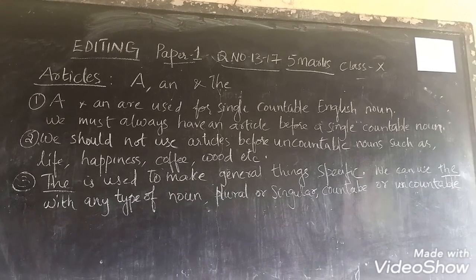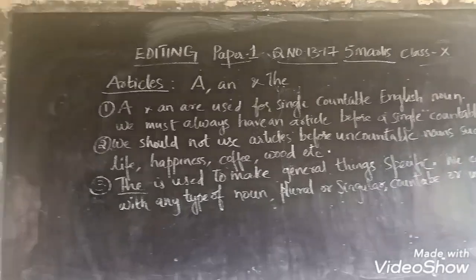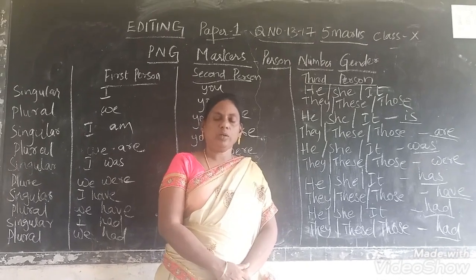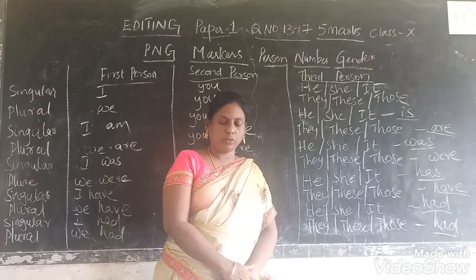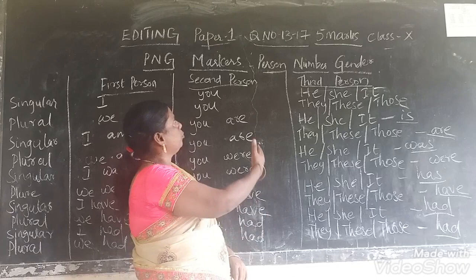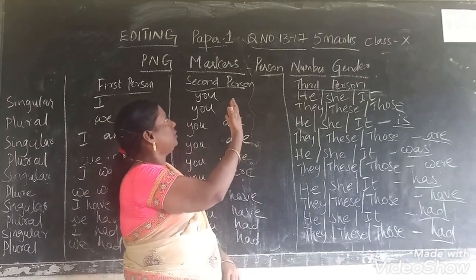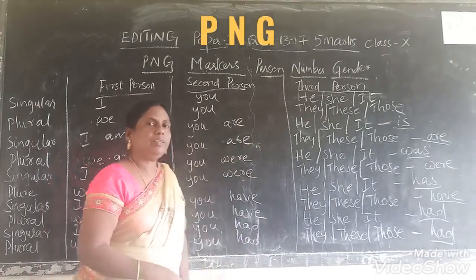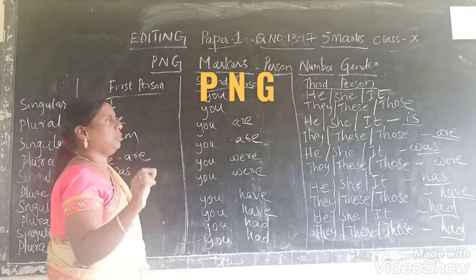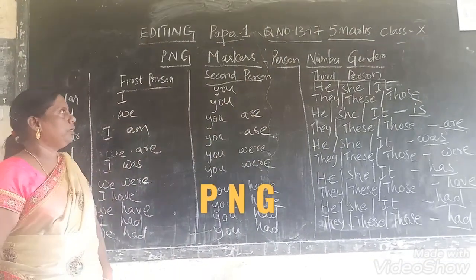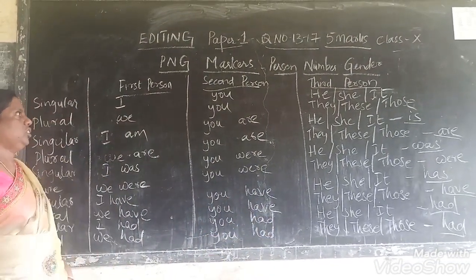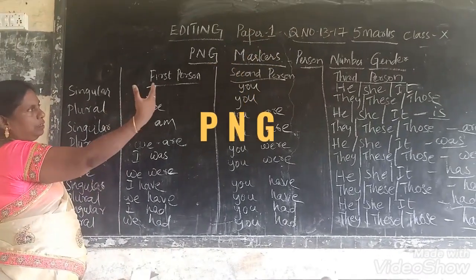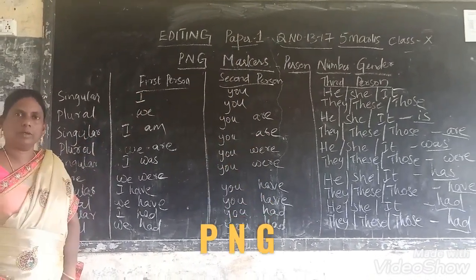Next, we shall go to the next topic — PNG markers. Now let's come back to person, number, gender markers. Remember, P stands for person, N stands for number, and G stands for gender. So what is person? First person, second person and third person.